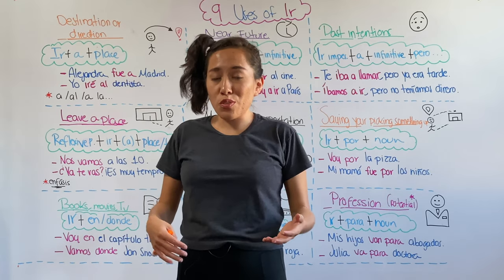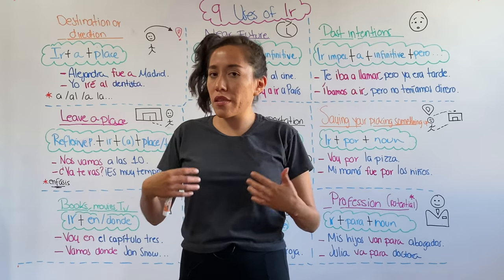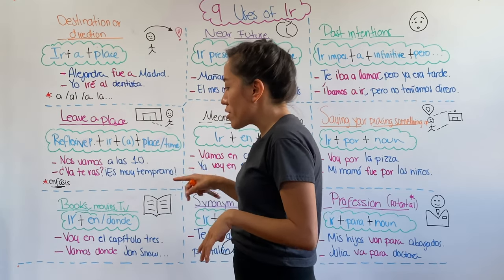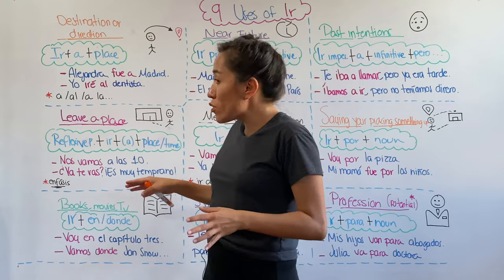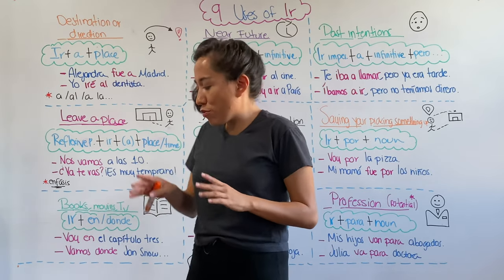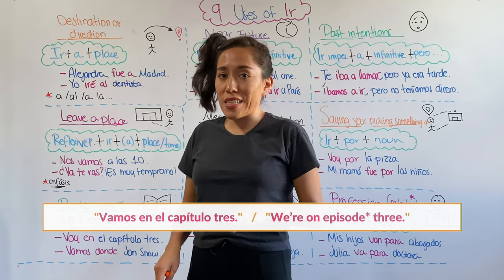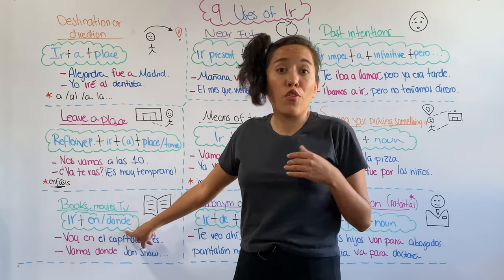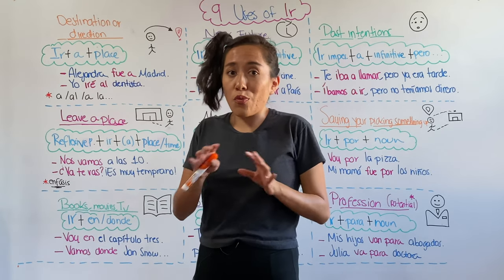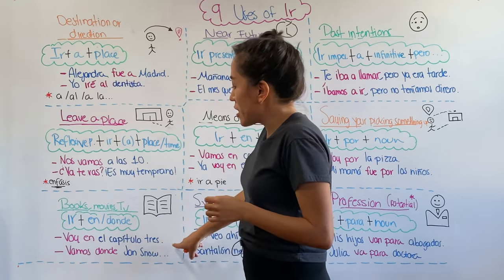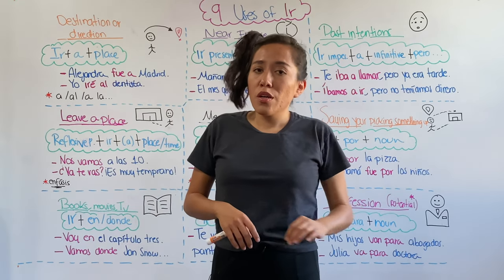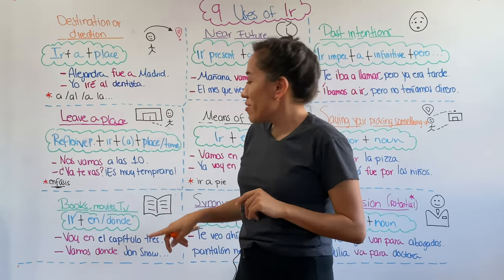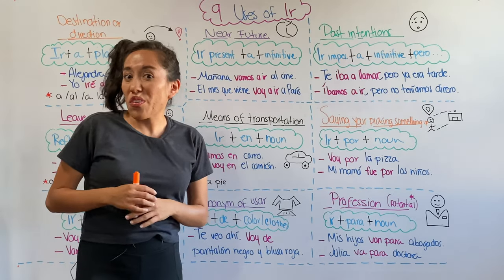I love recommending books, TV shows, and movies, but I hate spoiling things to people. So in order to know it's safe to talk about something, we use the verb ir to ask where people are at. For example, vamos en el capítulo 3 — I'm on chapter 3, don't tell me more. You can also replace en with donde to provide a more detailed description of where you are in a book or TV show. For example, vamos donde Jon Snow came back from the dead. Use this so you don't spoil things to people.